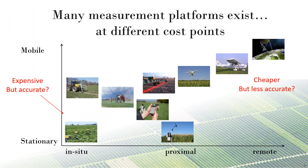In order to scale Agricultural Analytics, there are three main challenges. The first challenge is that the data occurs in various kinds of formats depending on whether the sensor is in situ, proximal or remote, or whether it is mobile or stationary.